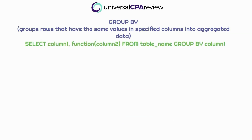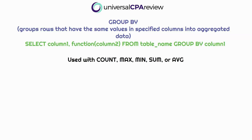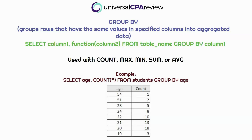GROUP BY groups rows that have the same values in specified columns and aggregates data. If you're familiar with Excel, it's kind of like a pivot table but for SQL. It's often used with aggregate functions like COUNT, MAX, MIN, SUM, or AVG, to group the result set by one or more columns. For instance, the command on screen groups a list of different ages and the number of students of each age, and the result would look like what's shown.